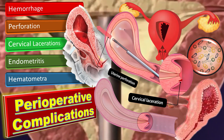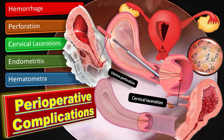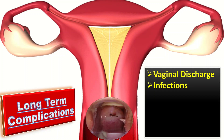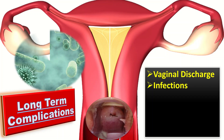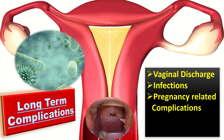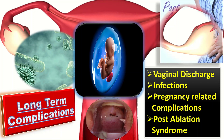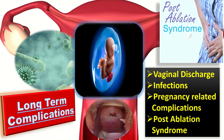Long-term complications of endometrial ablations include vaginal discharge, risk of infection such as endometritis and myometritis, and pregnancy-related complications like miscarriage or ectopic pregnancy. Post-ablation syndrome is present in about 6–10% of cases.